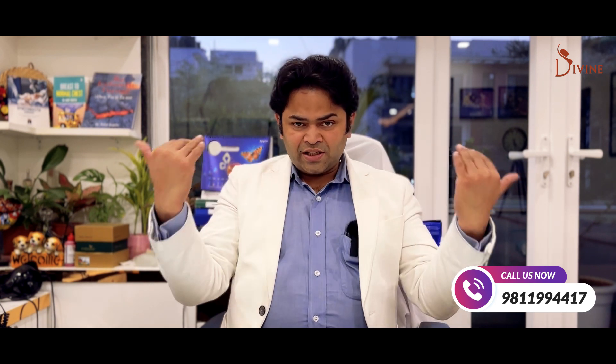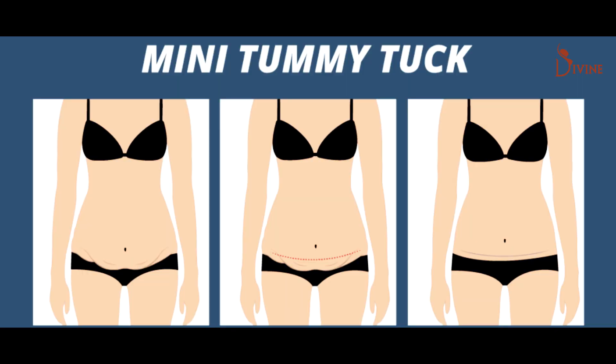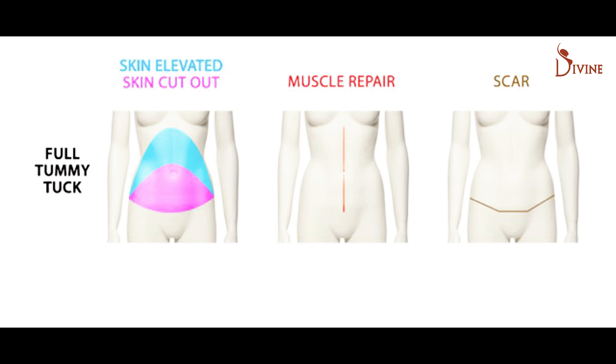In a mini tummy tuck, the position of the belly button is not changed — it just comes down a little bit and we don't need to cut the belly button. If there is more skin looseness, muscle weakness, and you look in the mirror and find your whole lower abdomen skin sagging like a bag, then you need a full tummy tuck. Do a 360-degree lipo, do a tummy tuck, and get a nice flat abdomen — you can even get six-pack definition along with that procedure.